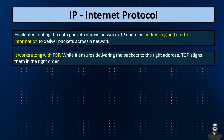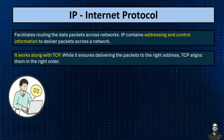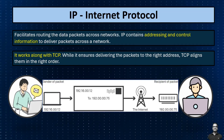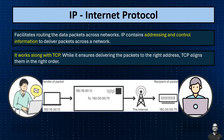For example, when you send an email to your friend, the email client breaks down your message into packets of data. IP adds addressing information to these packets, specifying the sender's and receiver's IP addresses. These packets are then routed across the internet, hopping through various routers and networks until they reach the recipient's email server.